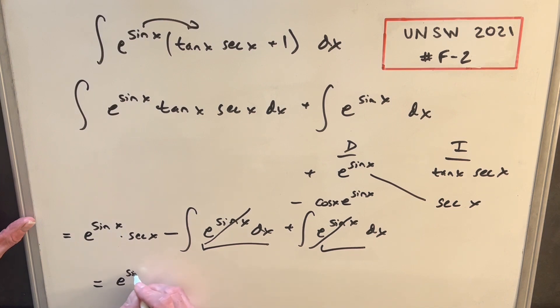And so then our final solution is just going to be this piece. So we're going to have e sine x secant x plus C, and that's it.